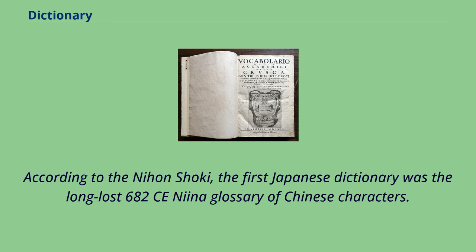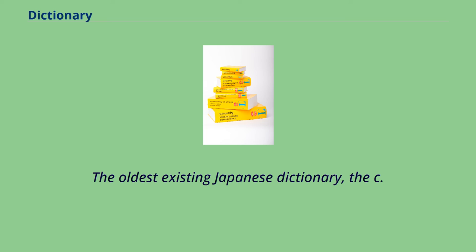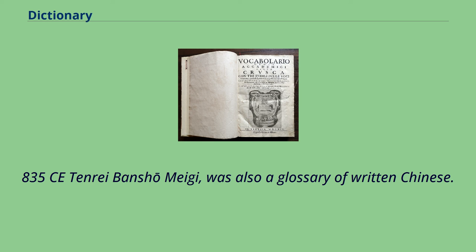According to the Nihon Shoki, the first Japanese dictionary was the long-lost 682 CE Niina glossary of Chinese characters. The oldest existing Japanese dictionary, the c. 835 CE Tenrei Bansho Meigi, was also a glossary of written Chinese.